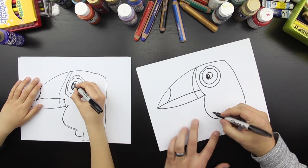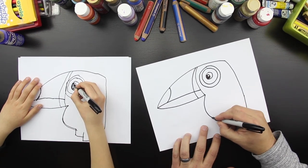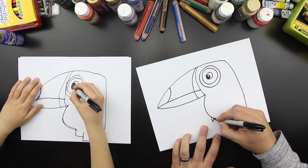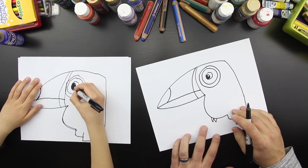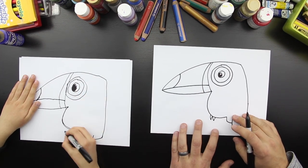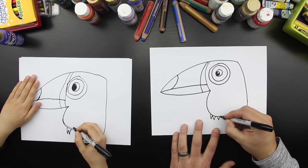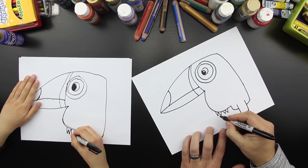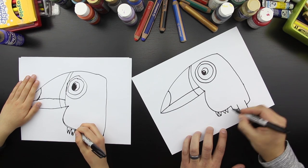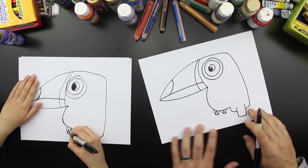Okay, let's do its feet. We're going to do kind of like the owl, we're going to do a W. Are you still coloring in? Do a W, and then do another W, and then put a curved line at the bottom of each W.